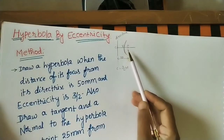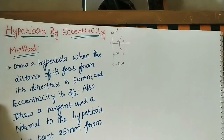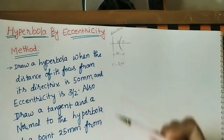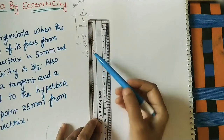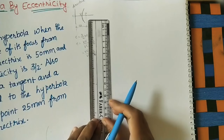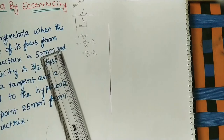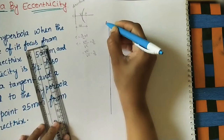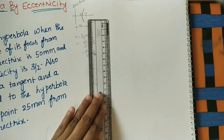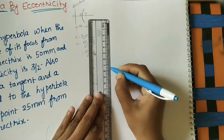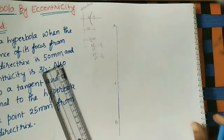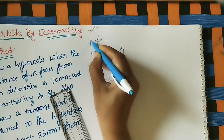First we will do the diagram using instruments, then we will draw the tangent and normal. First, draw the directrix of some length — we can take 10 cm, 12 cm, it is our choice. Draw one vertical line for the directrix; here I am taking about 15 cm length. Give the name AB for the directrix, and take the middle point — or just any point on the directrix. I am taking this point as C.